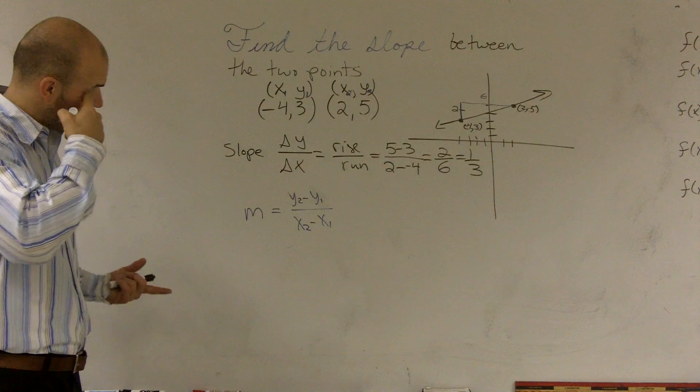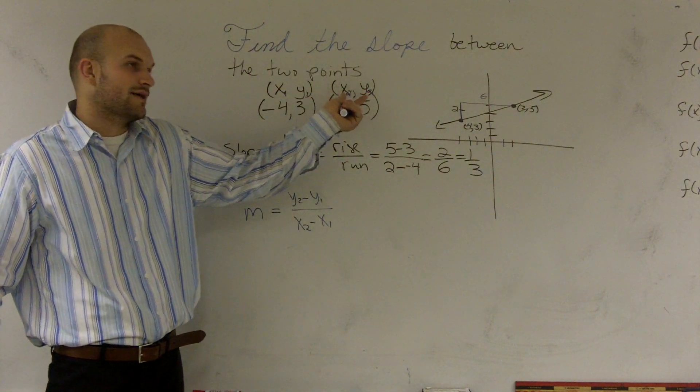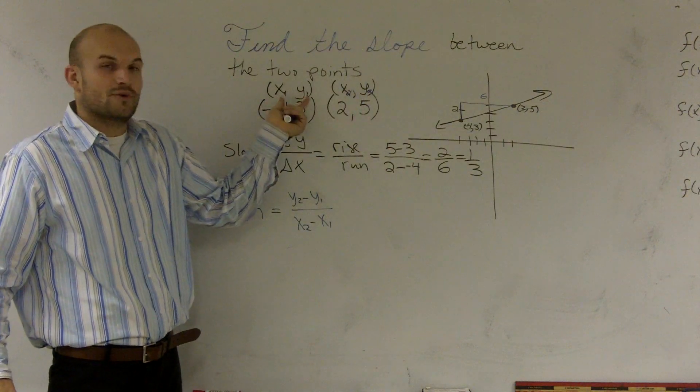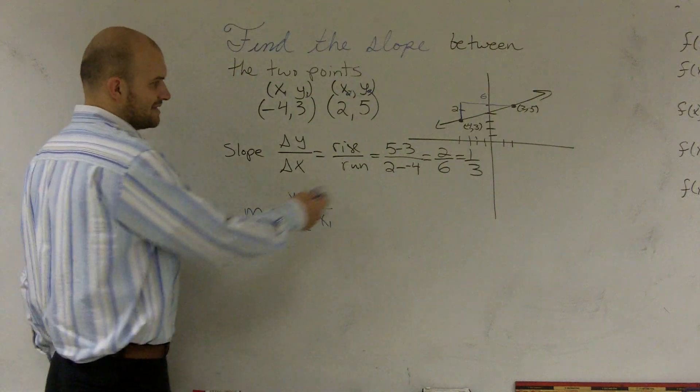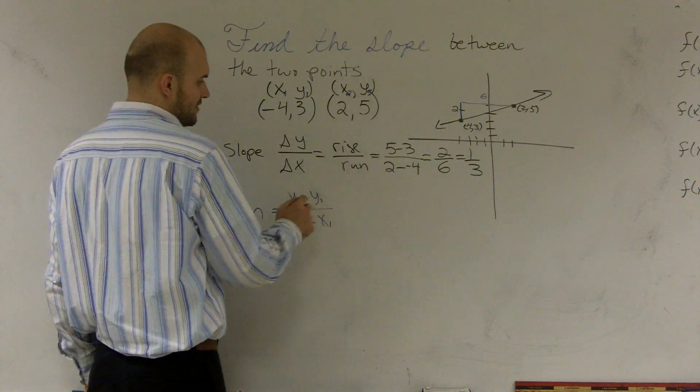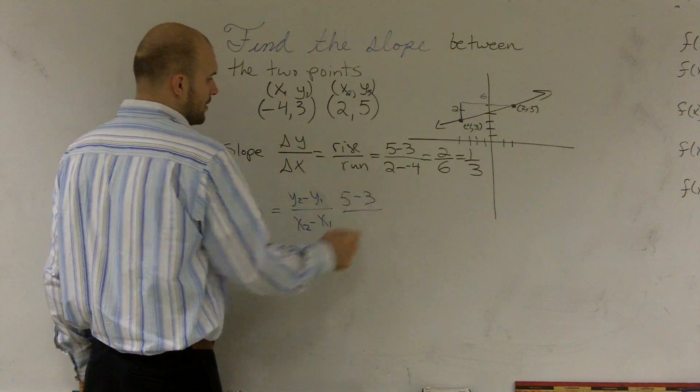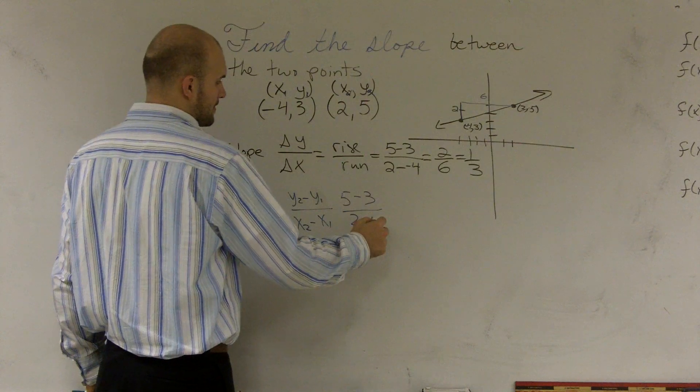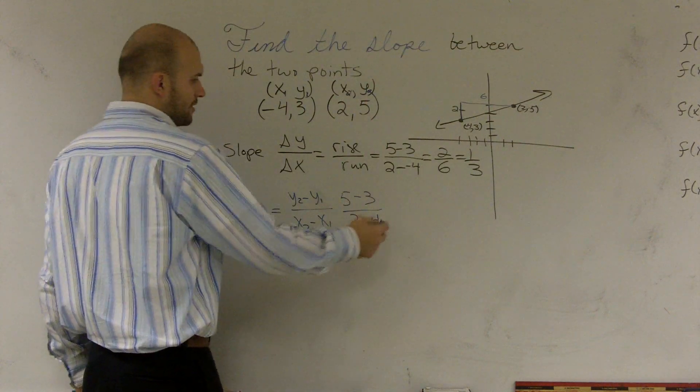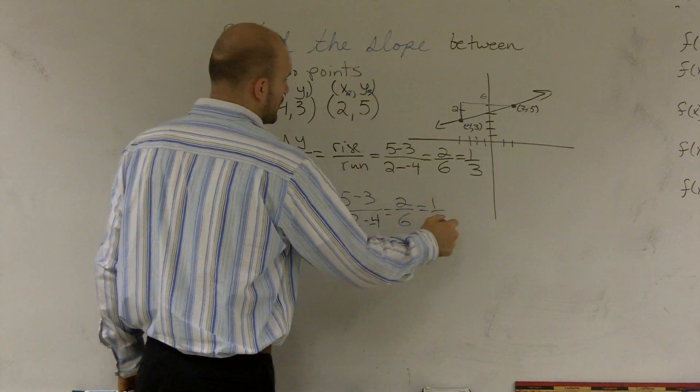And so what happens is, and it doesn't really matter how you label it. I could have labeled these x1, x2 or y1 and this one x2 and y2. It doesn't matter which way you do it. But what you'll notice is I get the exact same work that I just did over here. y2 is 5 minus y1 is 3. All over x2 is 2. y1 is negative 4. So therefore, again, I get 2 over 6 which is equal to 1 third.